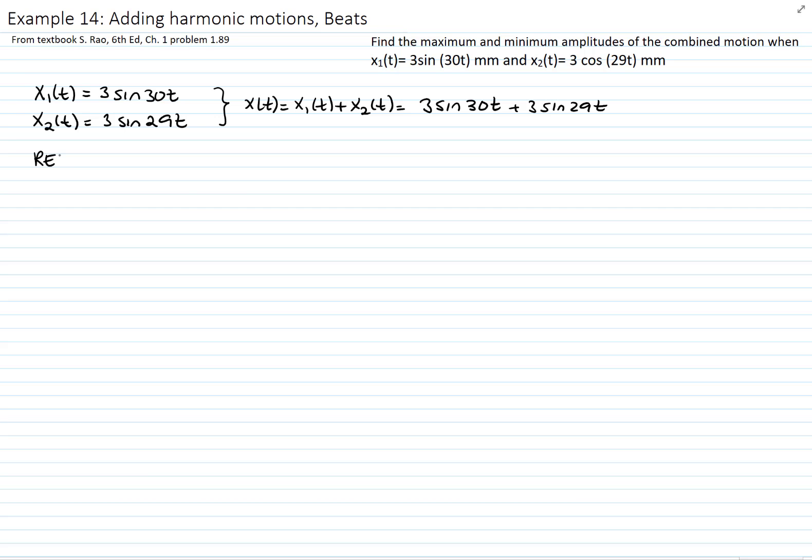To do that, we will recall the trigonometric identity: that adding sin(a) plus sin(b) gives me 2 sin((a+b)/2) times cos((a-b)/2). So in this case,